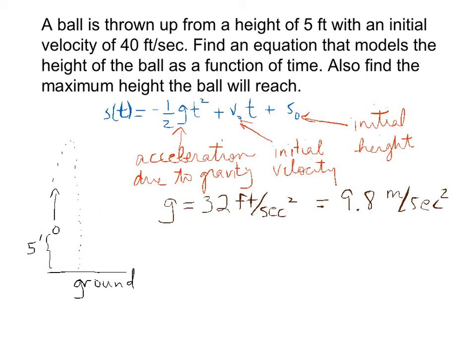Therefore, we have s of t is equal to negative one-half times 32 times t squared plus v naught t, so plus 40 t, plus the initial height, which is 5. So once again, this 40 came from the initial velocity, and this 5 came from the initial height.